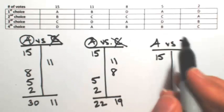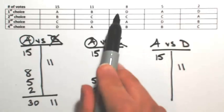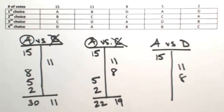In the second column, D is over A, so D gets 11. In the third column, D is over A, so D gets 8. Looking promising for D.